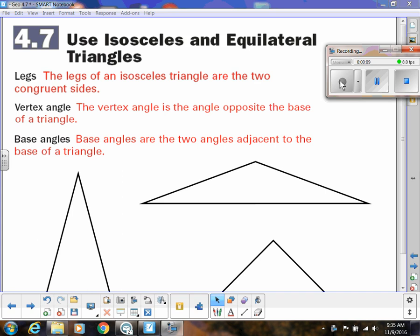First of all, some vocabulary. I think you know this, but I want to make sure everyone does. The legs of an isosceles triangle are the congruent sides. So we know that isosceles triangles have two congruent sides, but specifically we call these the legs.